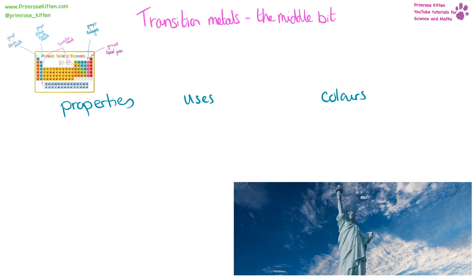Transition metals are in the middle. Their properties are that they are hard, shiny, and are good conductors. These are basically your traditional metals, so any property of a traditional metal you can generally associate it with a transition metal.